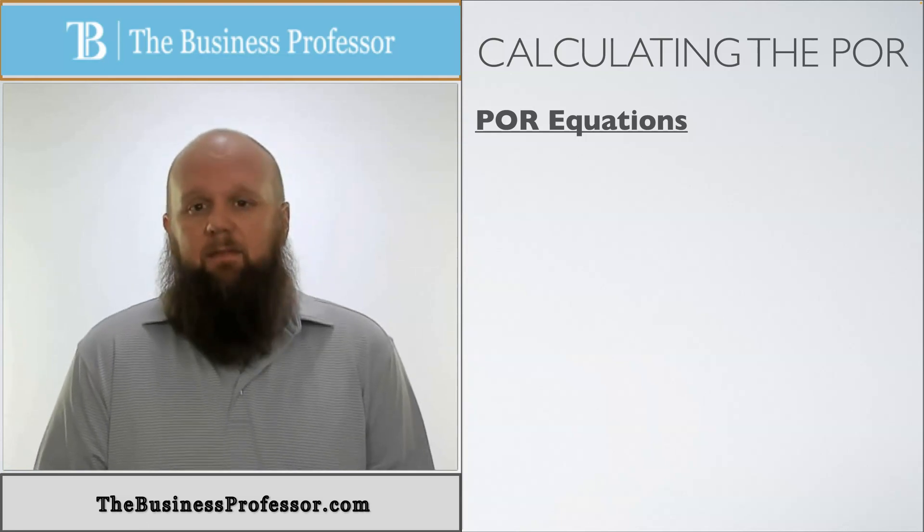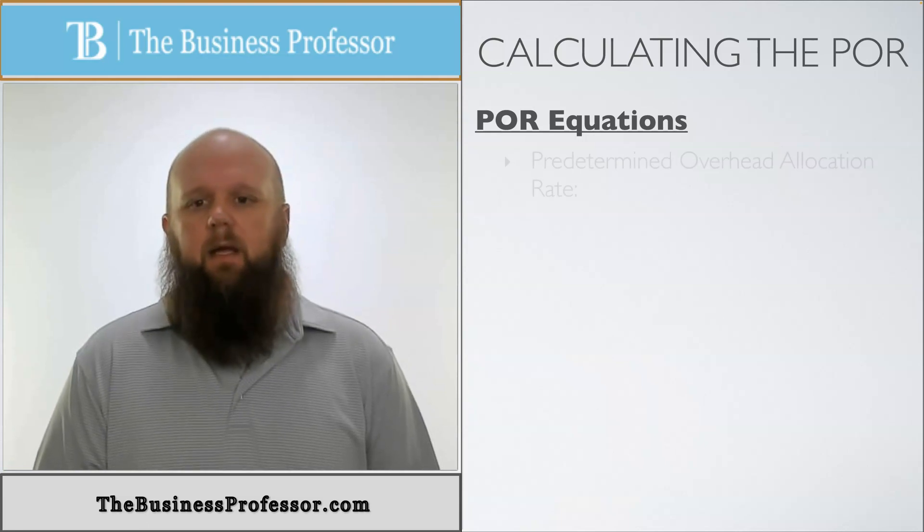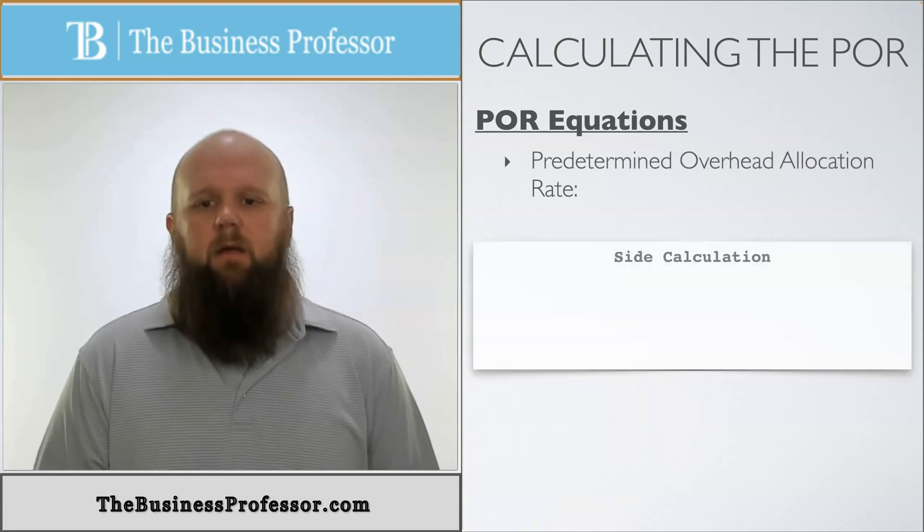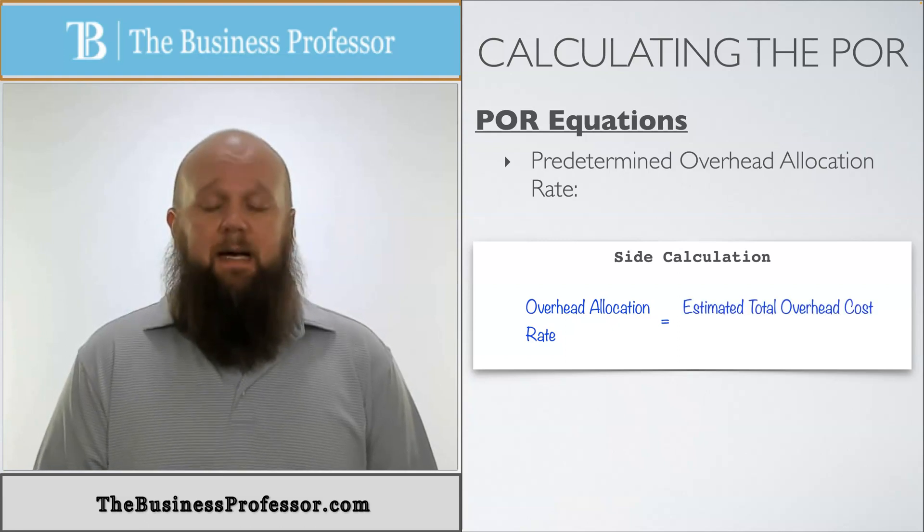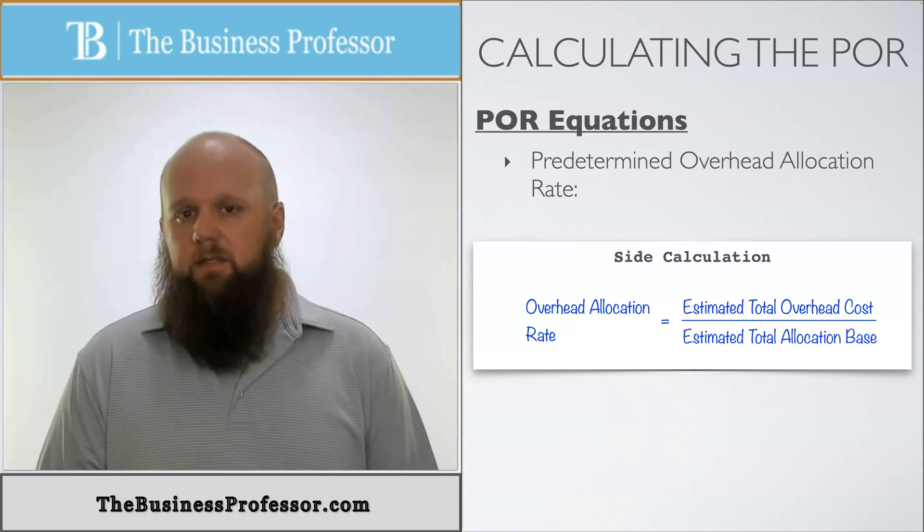So the first one we have to have is, what is our POR? What is our predetermined overhead rate? And the equation for that is going to be estimated total overhead costs divided by estimated total base, or allocation base.